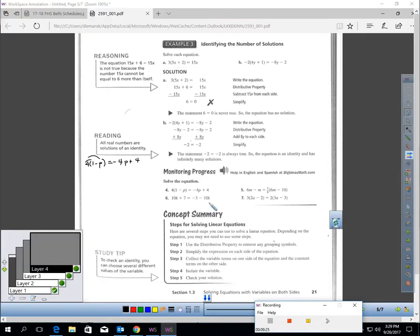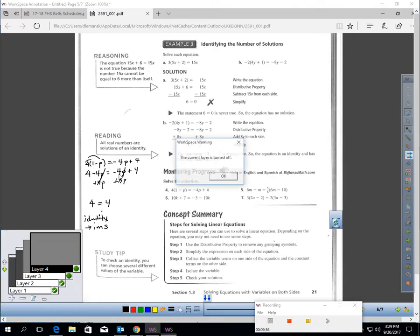I'm back. For number 4, we have to simplify each side first. I can simplify here by distributing. That gives me 4 minus 4p equals negative 4p plus 4. Step 2, I see variables on each side. I've got to get them all to one side. I decided I don't want the negative 4p there. I'll add 4p, which cancels these.